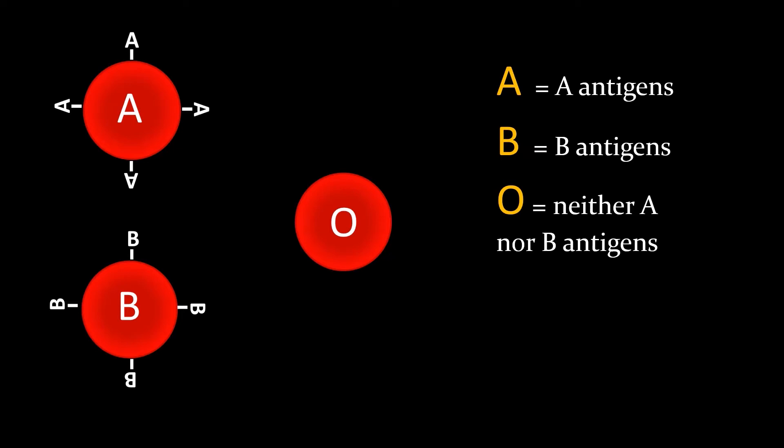When a person has a positive blood type, that means they have an RH antigen. But if they have a negative blood type, that means they do not have an RH antigen.